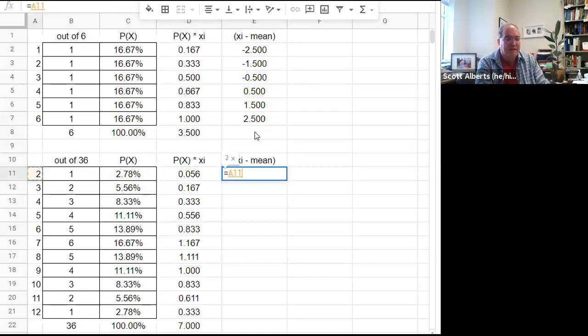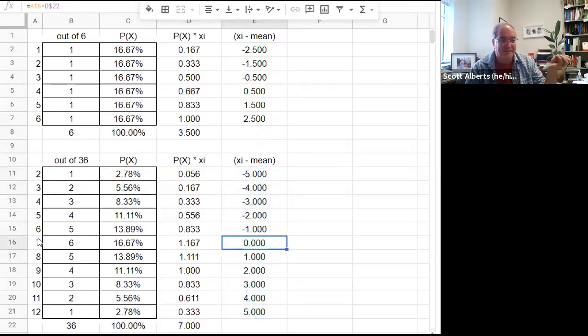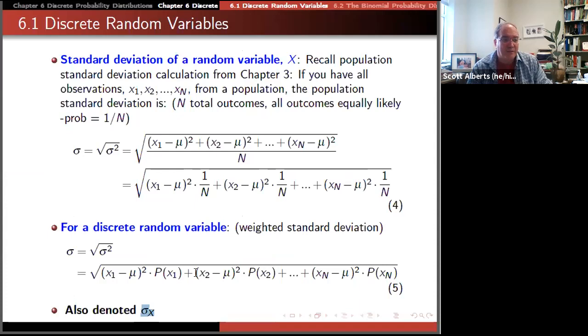We can do the same thing here. We'll take one minus that mean. Two minus seven is negative five. We're going to get this nice symmetric structure. Seven is the mean so seven minus seven is zero. If we added those up we get them equal to one. That's what each one of these is.